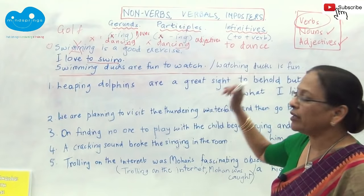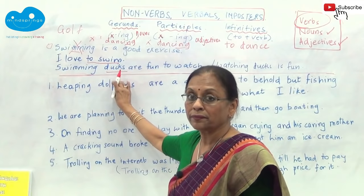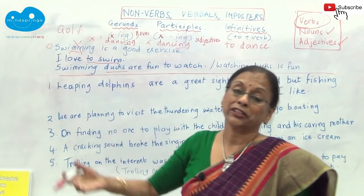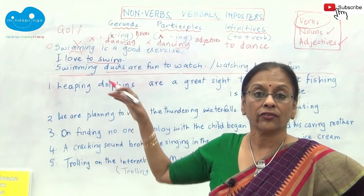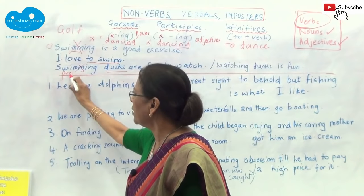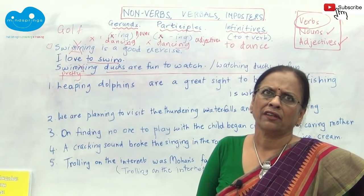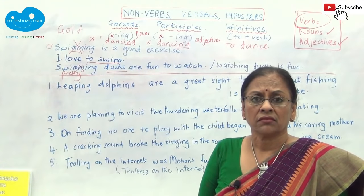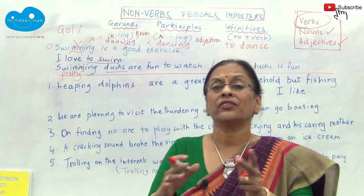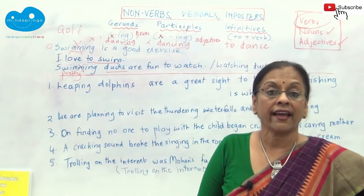'Swimming ducks are fun to watch.' Can you see the noun 'ducks' and what is in front of it? Swimming. So what is 'swimming' here? It's an adjective — what kind of ducks? Swimming ducks. I can cut this and say 'pretty ducks,' 'black ducks,' 'several ducks,' 'smooth ducks,' 'cute ducks' — I can put any ordinary adjective and it works. You can only change an adjective with another adjective. Therefore 'swimming' here is an adjective, which means it's a participle.